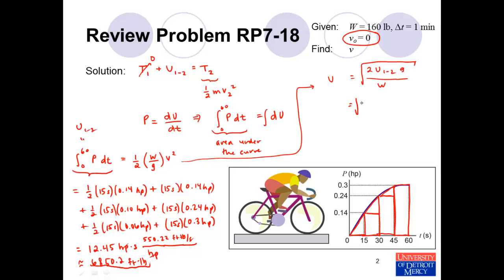Plugging in numbers, I have the work done in foot-pounds. The acceleration due to gravity is 32.2 feet per second squared. The weight is 160 pounds. The pounds cancel, we'll get feet squared over seconds squared. When we take the square root we'll get feet per second. And if we punch that into our calculator, we get that the cruising speed is approximately 52.5 feet per second.